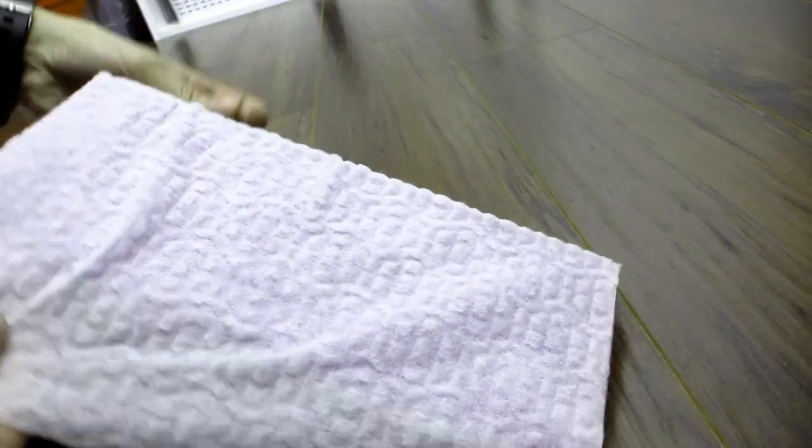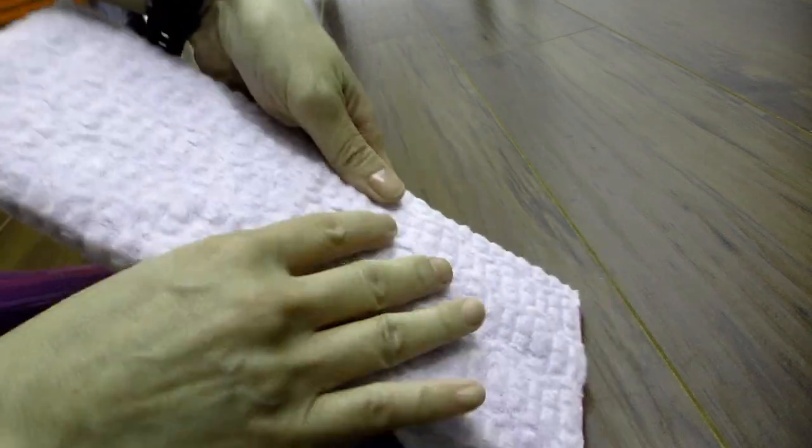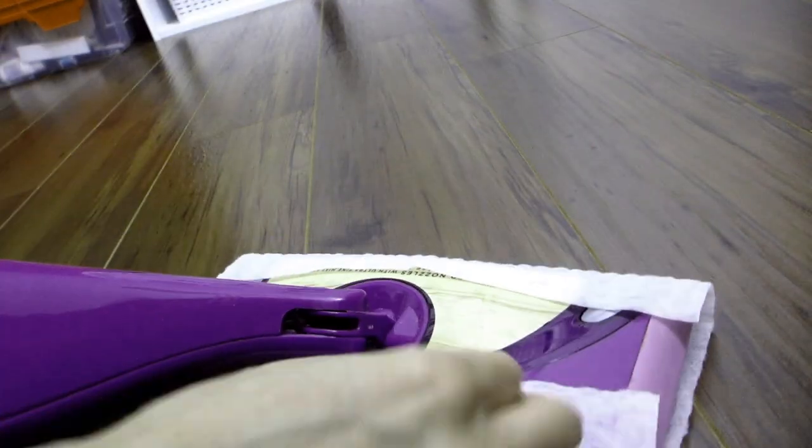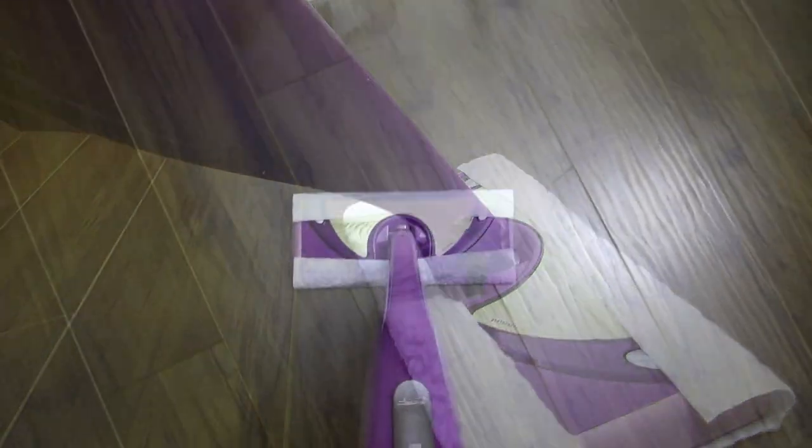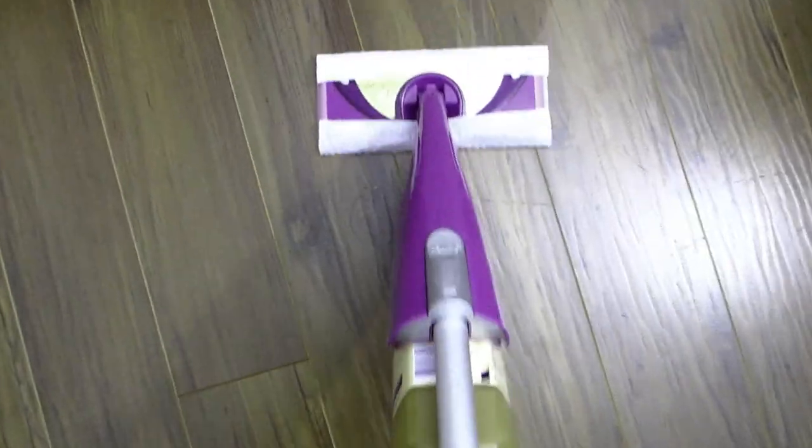You can see here the wet jet mop head already comes with velcro on the top surface area so the cloth can be easily secured directly to the bottom of the wet jet mop. Then you can mop away and even use a cleaning solution inserted into your wet jet mop.